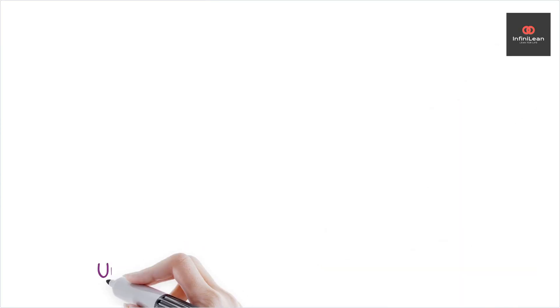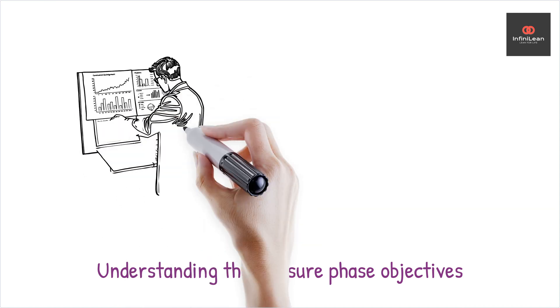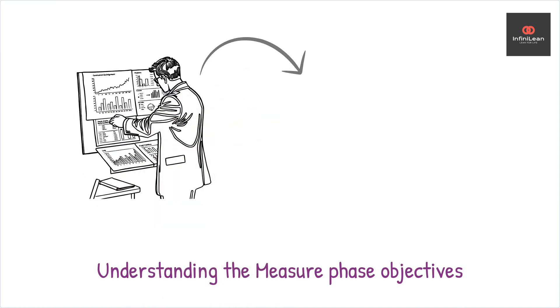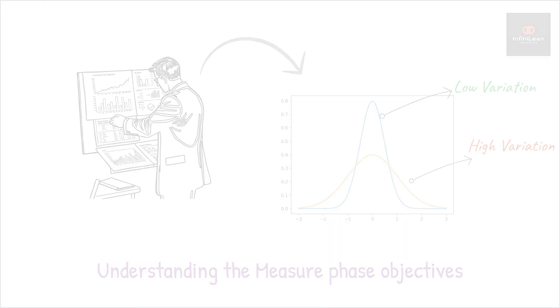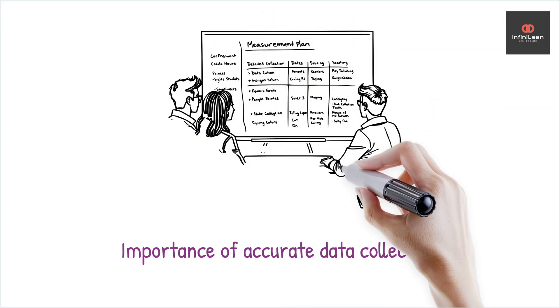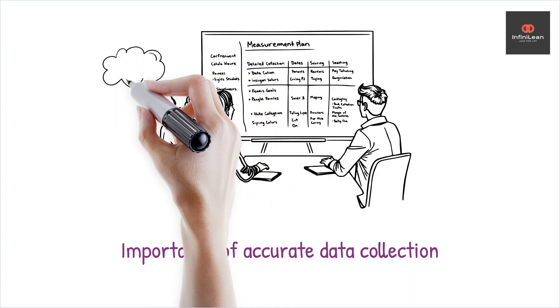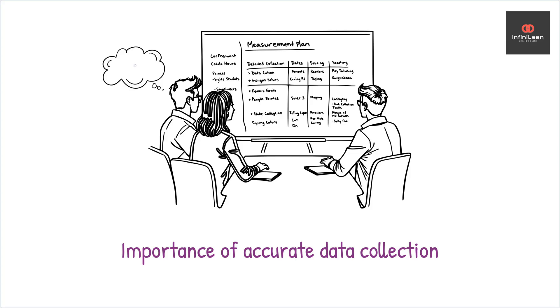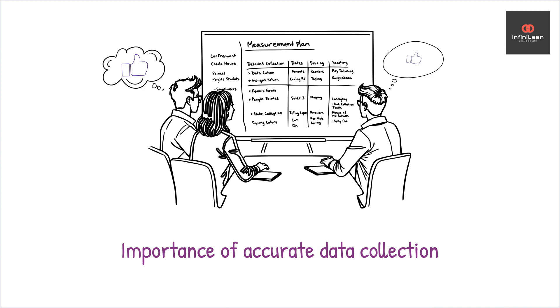The heart of the Measure Phase is determining how well the current process performs. This is done by collecting meaningful data that clarifies how much variation exists within the current processes. Precise data collection is vital — any decisions or conclusions drawn in subsequent phases could be flawed without accurate data. The first step is to develop a detailed measurement plan that ensures you capture data correctly and consistently, define what will be measured, identify the necessary tools and methods for data collection, and ensure every team member understands their role.